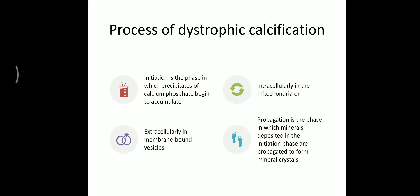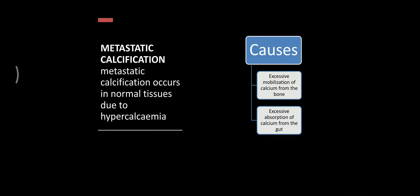The second type is metastatic calcification. Unlike dystrophic calcification, which occurs over dead and degenerated tissue, metastatic calcification occurs in normal tissue. Dystrophic calcification is reversible, while metastatic calcification causes irreversible injury. It is caused by hypercalcemia — excessive calcium — which may result from two causes: excessive mobilization of calcium from bones, or excessive absorption of calcium from the gut.